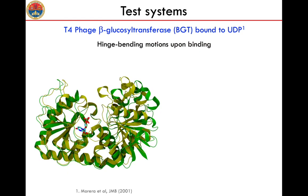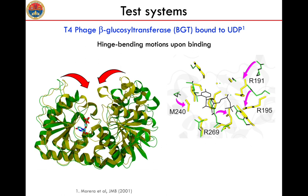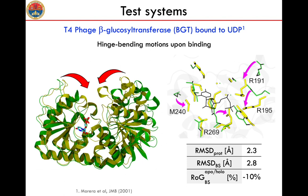The second system is beta-glucosyl transferase, which binds to uridine-diphosphate. This protein undergoes hinge-bending-like motions upon binding, and the binding site clearly closes on the ligand. This is visible also when comparing the movement of single amino acids, as shown by the magenta arrows. Indeed, we have a change of the binding site of almost 3 Å in terms of RMSD between the apo and holo conformations, and about 10% variation in the radius of gyration.